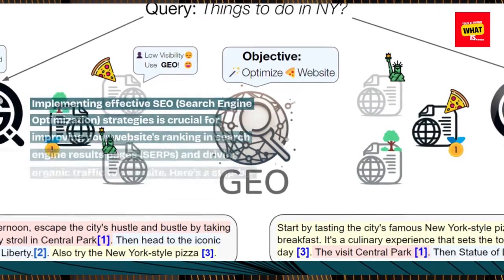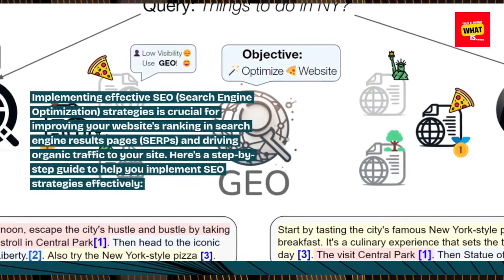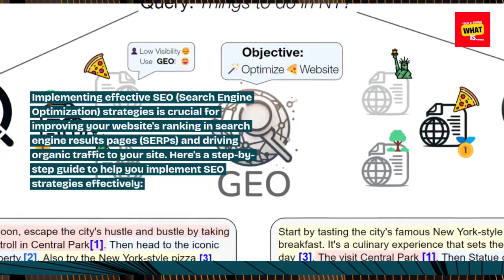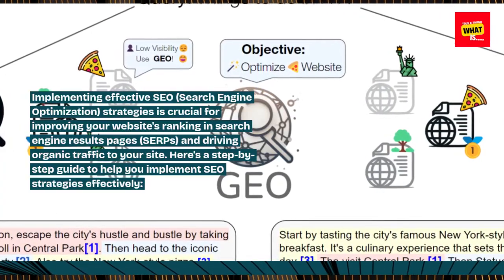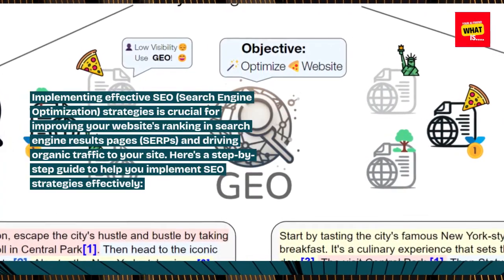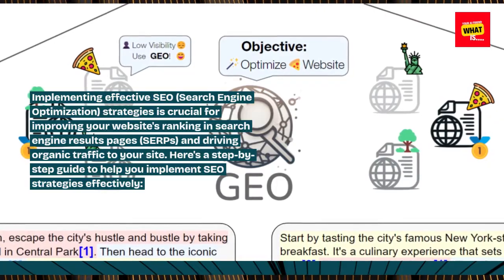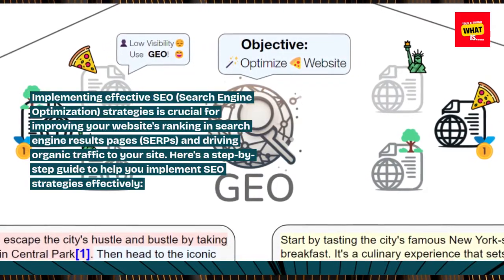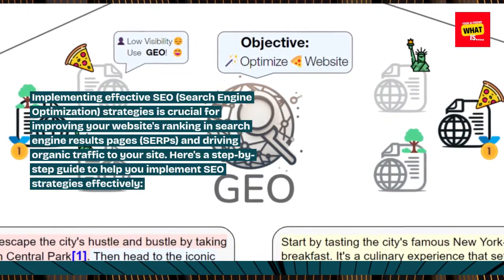Implementing effective SEO strategies is crucial for improving your website's ranking in search engine results pages and driving organic traffic to your site. Here's a step-by-step guide to help you implement SEO strategies effectively.